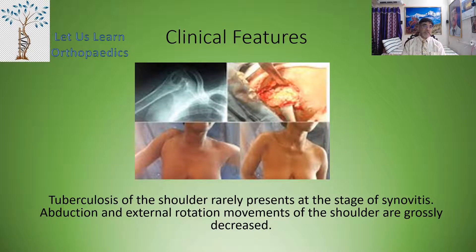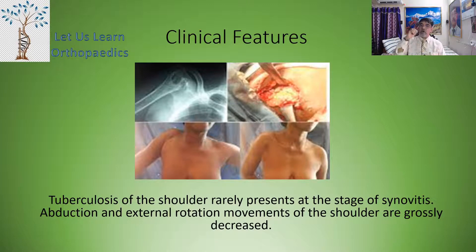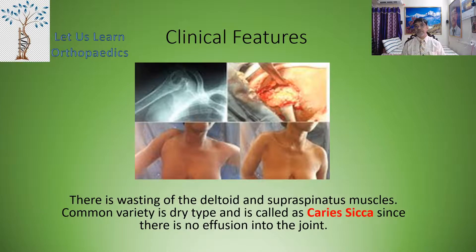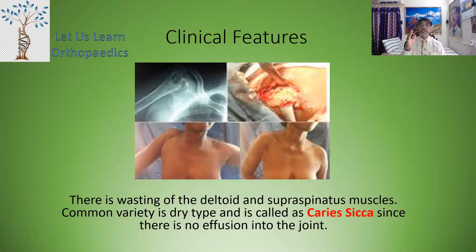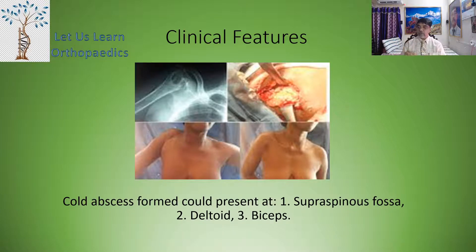As far as clinical features are concerned, tuberculosis of the shoulder joint rarely presents at the stage of synovitis. Only when the abduction and external rotation movements of the shoulder are grossly decreased will the patient come to you. There is wasting of the deltoid and supraspinatus muscles mainly. The common variety is the dry type, called caries sikka, because there is no effusion into the joint.